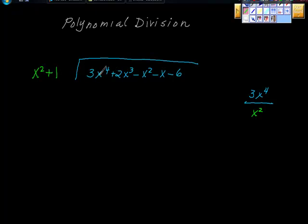So what we're going to do first is 3x to the fourth divided by x squared. So x to the fourth divided by x squared is x squared. 3 divided by 1 is 3. So the first term we're going to get here is 3x squared.